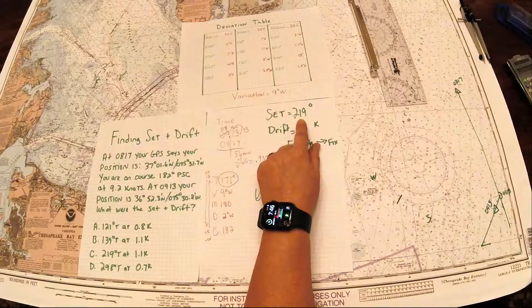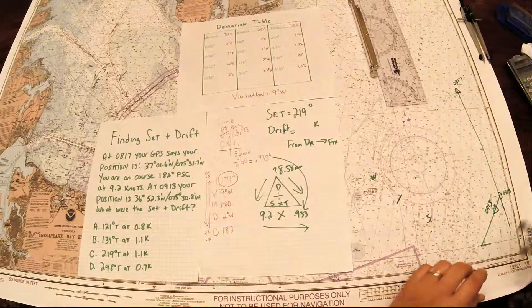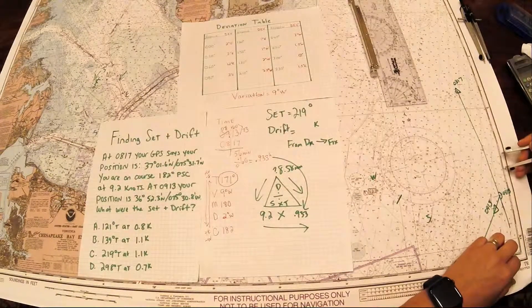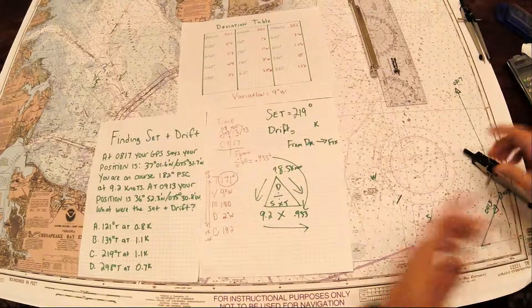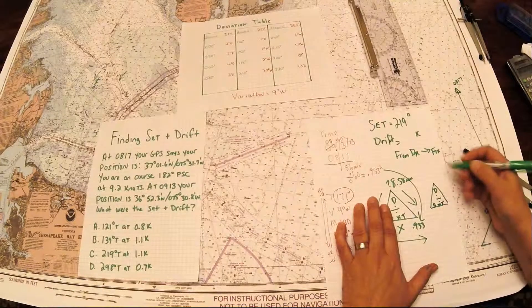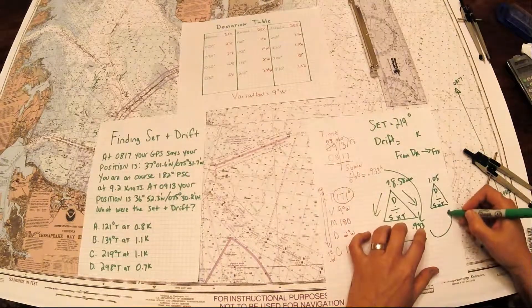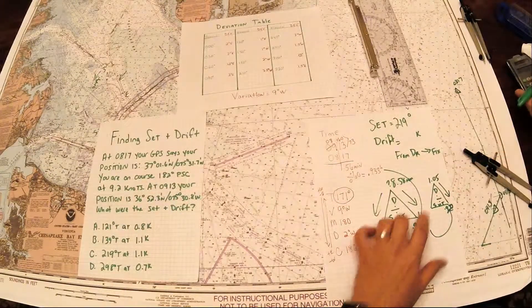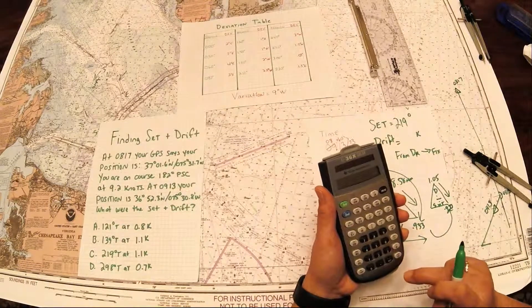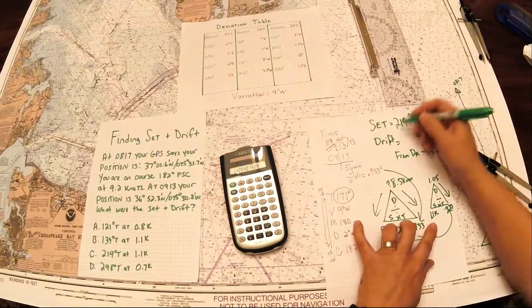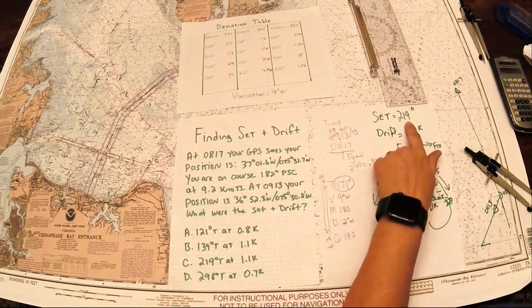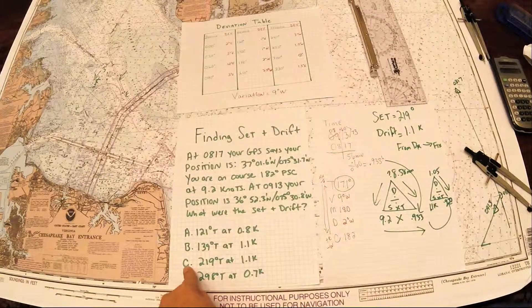The second part I'm going to measure. I'm going to use the divider - the divider has two points. I'm going to use the divider to measure the distance. I'm going to measure the distance between the DR and the fix, and I'm going to use my latitude scale. I got 1.05. This is where your second DST is going to come into play. 1.05 is my distance, same time as used, 0.933. Distance divided by time: 1.05 divided by 0.933 gives us 1.1 knots. Our drift is 1.1 knots. So I go back and I look at my choices, and I have 219 at 1.1 knots, which works pretty good for C. And that is the answer.